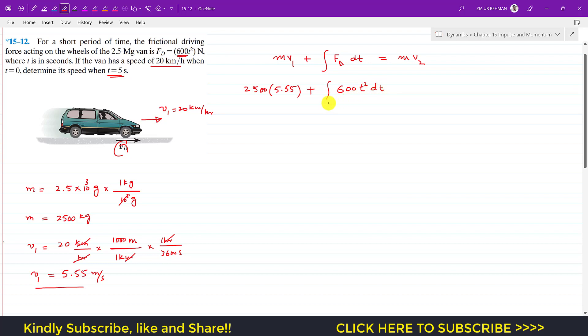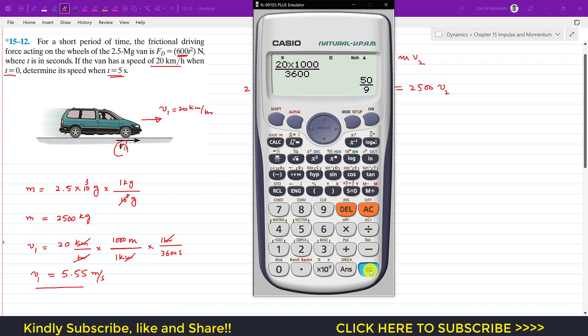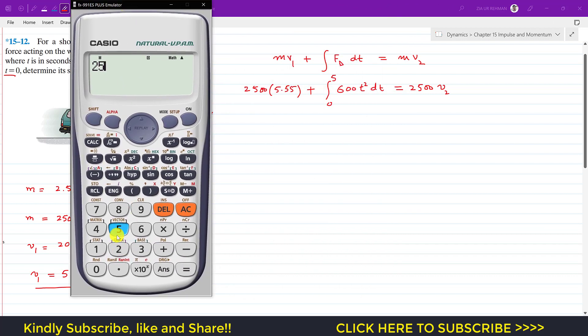We integrate dt from 0 to 5 seconds. The initial velocity is at 0 seconds and the final time is 5 seconds. We want to integrate it from 0 to 5, and this equals 2500v₂.